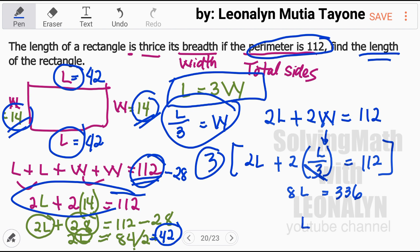We can add 6L and 2L. That is 8L. Now, to isolate L, to get the value of L, since 8 is multiplying L, it divides 336. In other words, we divide by 8 on both sides to isolate L, our length. 336 divided by 8, that is 42. That's how easy it is. The length equals 42.